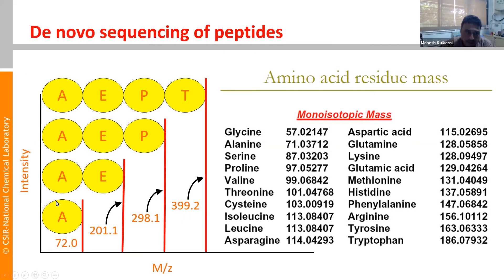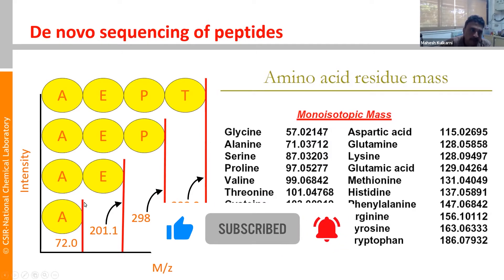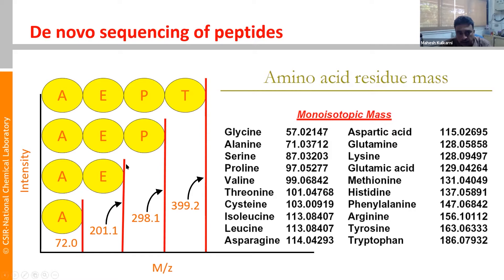So here, these are the fragment ions formed. We'll try to annotate this MS/MS spectrum. The first peak has a mass of 72, which corresponds to alanine — 71 plus protonation equals 72. So we assign this as alanine. The next peak is 201; subtract 72 (the first amino acid) from 201, and the difference gives the mass of the next amino acid: 201.1 minus 72 is 129.